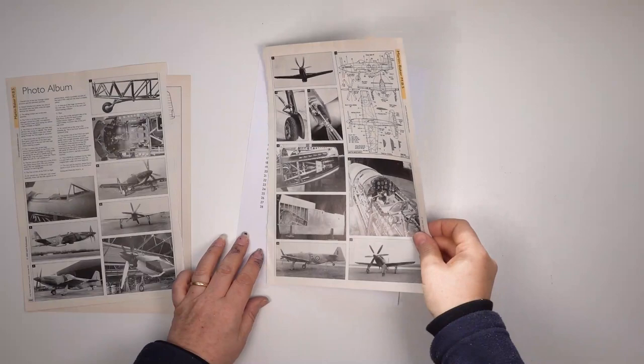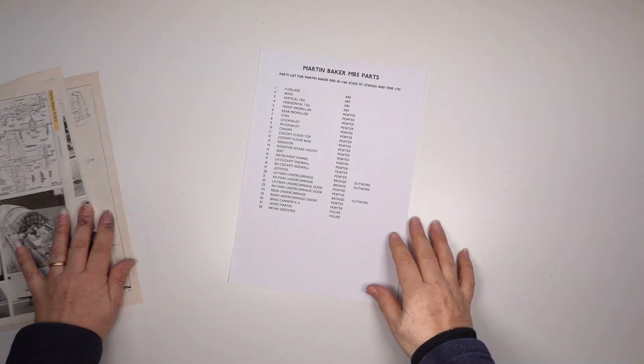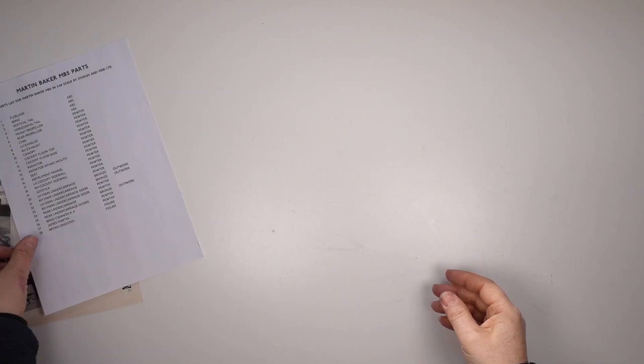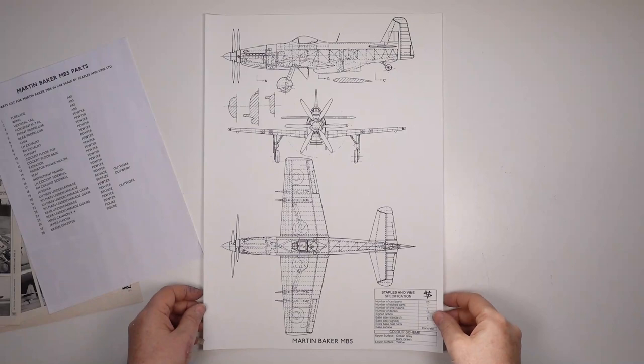A parts list helps me plan all the parts I have to sculpt and in what material each master will be. This is essential for when I'm planning the production molds. Of course I have printed out a master set of plans in 1-48 scale to work from.